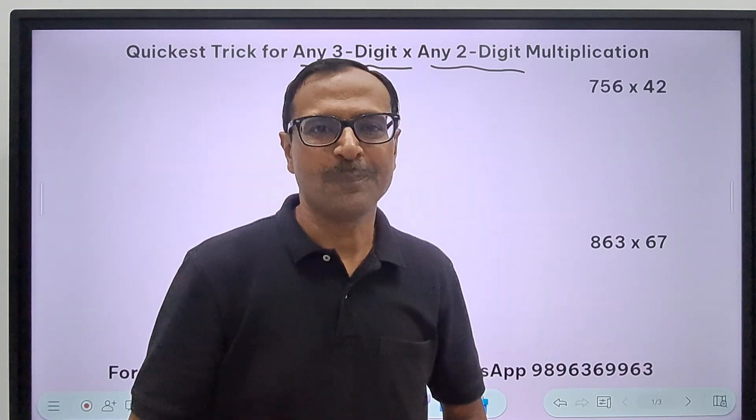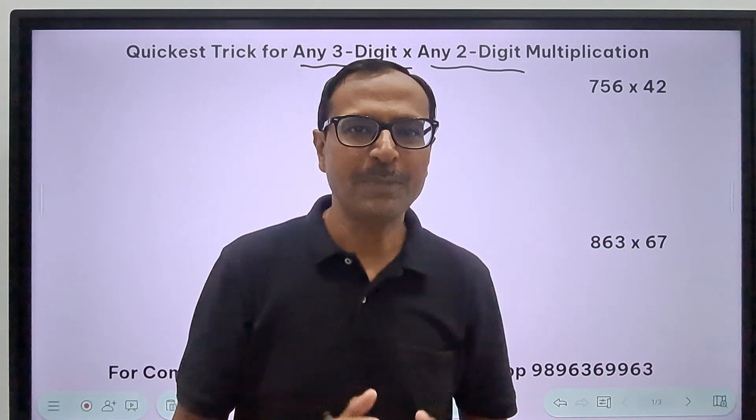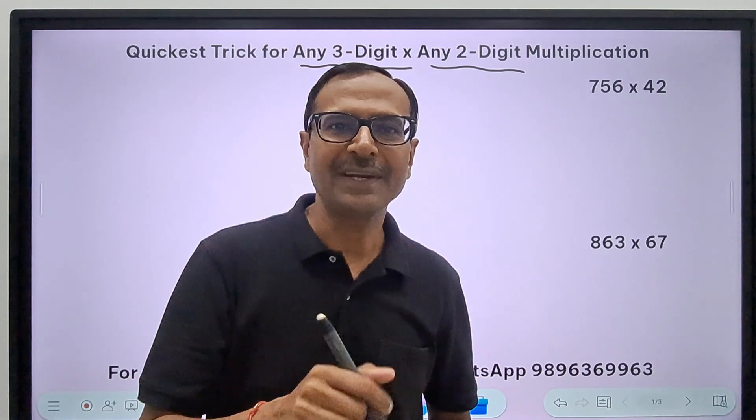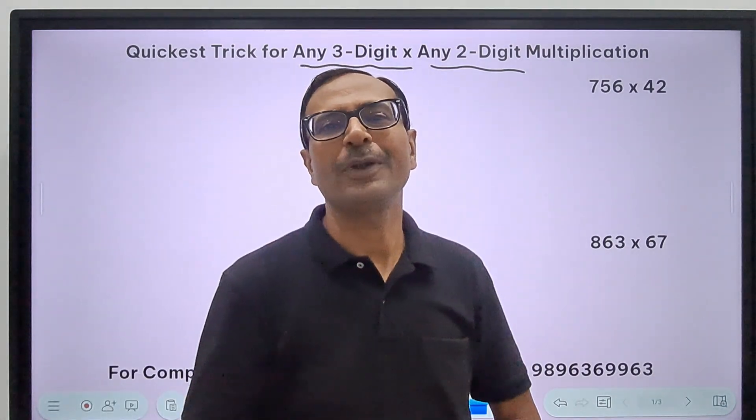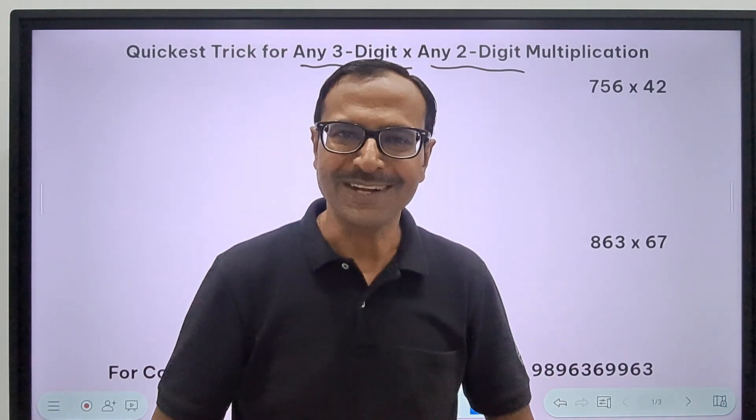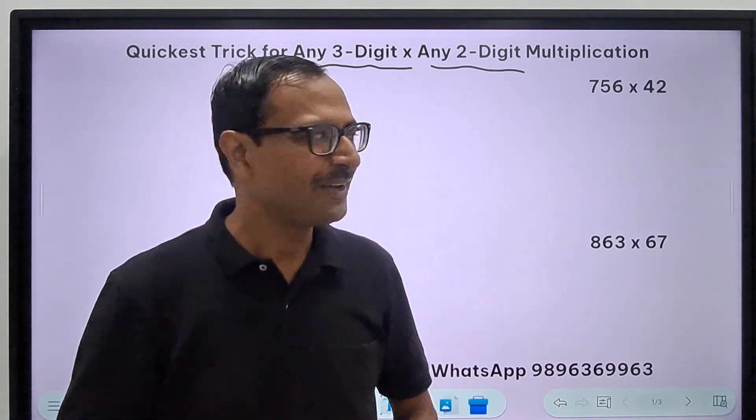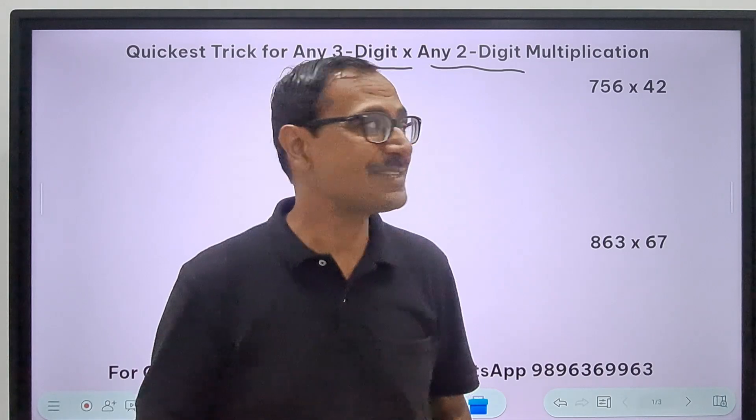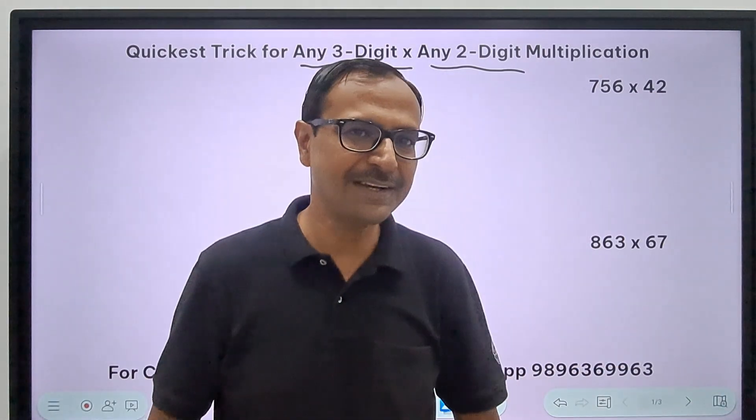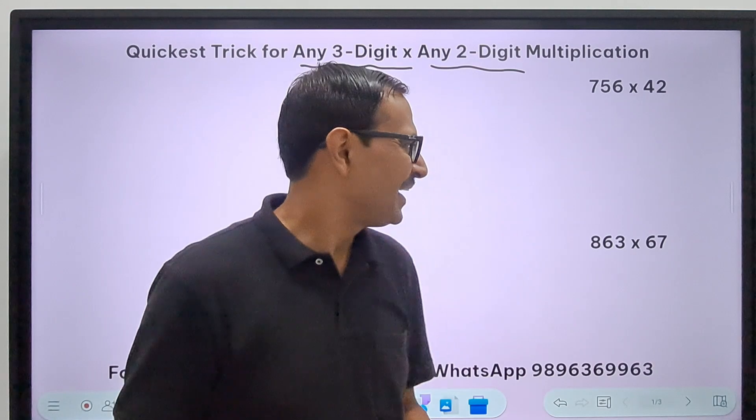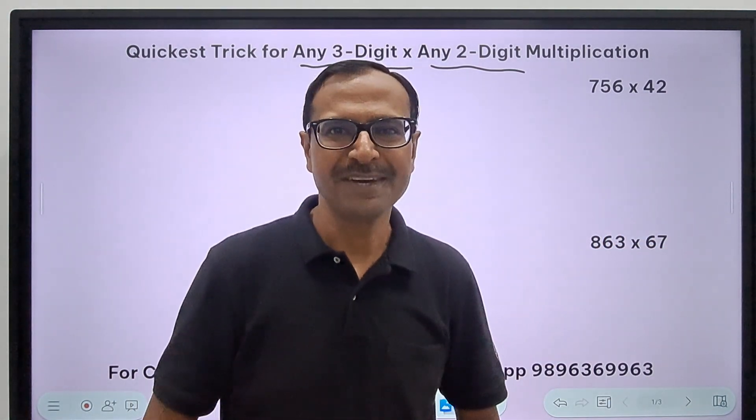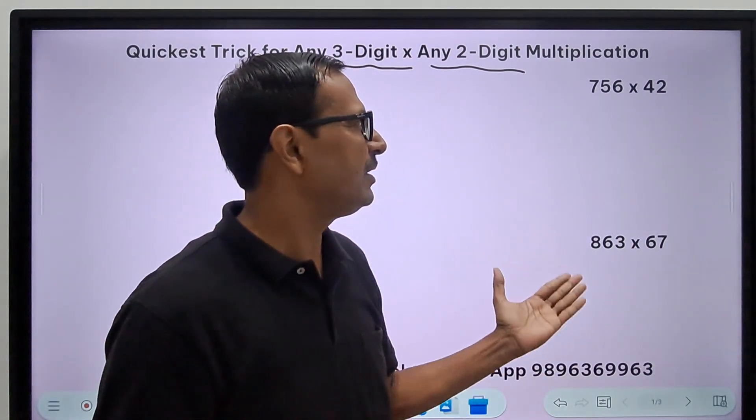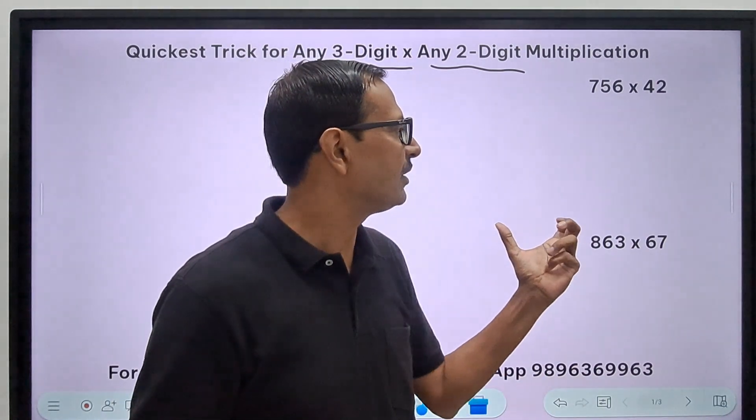If you are not, click the subscribe button right now and click the bell-shaped icon also so that you keep getting all the notifications. Look at these questions I have written here: 756 times 42, can you do that in a single line? It's difficult. 863 times 67, again little difficult. Most of us will be taking around 25 to 30 seconds each to solve these questions.